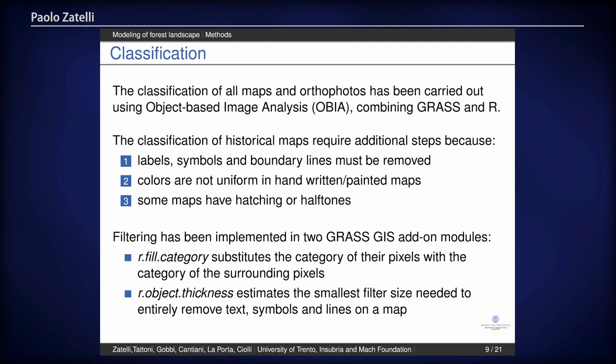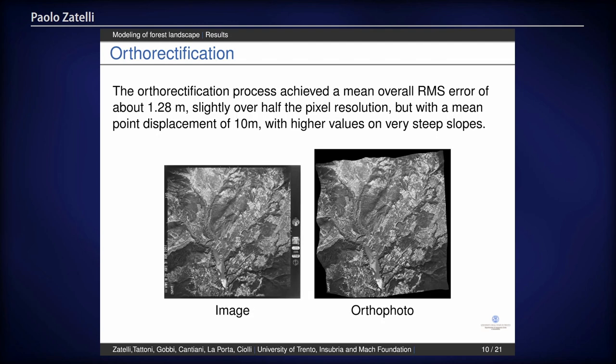To filter out all these unwanted features, we have developed some GRASS modules which are already available in the official GRASS add-on repository. The first one, r.field.category, removes all the labels, symbols, and so on. The second one is a module which can be used to estimate the size of the filter to apply to remove all unwanted objects from your image.